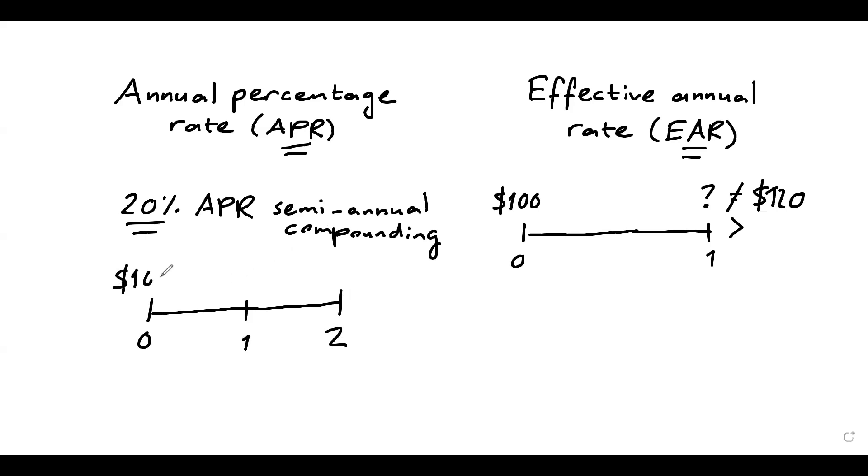So again, you will begin with an investment of $100. But instead of getting 20% over the course of the year, you will get half of it. So 10% every six months. So your balance after six months will be $110. So you earn 10% on your original $100. And over the second six-month period, you will again earn 10%, not only on your original balance, but on your current balance. So this is why we say that you earn interest on interest.